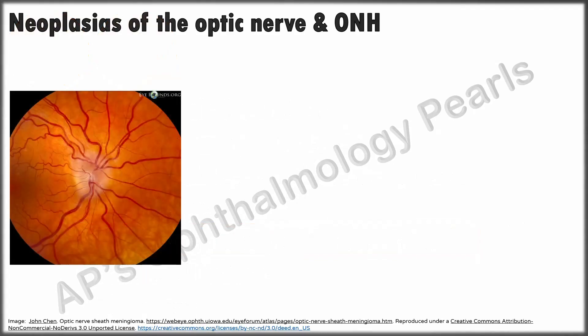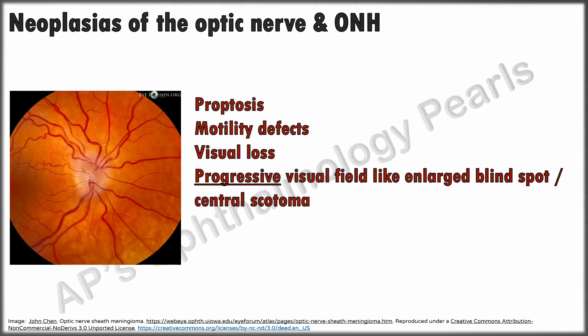Optic nerve gliomas and optic nerve sheath meningiomas can sometimes mimic a tilted disc when there is asymmetry. Additional features such as proptosis, motility defects, visual loss, and field changes different from those of tilted discs can provide clues. Of course, neuroimaging will help.